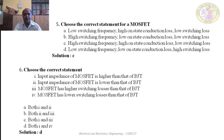Question 5: Choose the correct statement for a MOSFET. A — low switching frequency, high on-state conduction losses, low switching losses; B — high switching frequency, low on-state conduction losses, low switching losses; C — high switching frequency, high on-state conduction losses, low switching losses; D — low switching frequency, low on-state conduction losses, high switching losses. The correct answer is B — high switching frequency, low on-state conduction losses, and low switching losses.